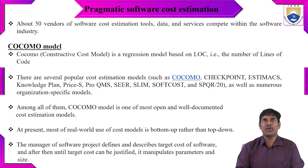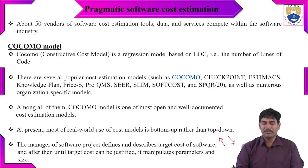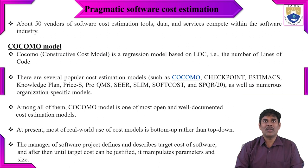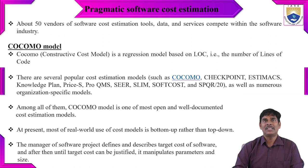At present, most real-world use of cost models is bottom-up rather than top-down. In the bottom-up approach, it goes from the bottom upward. The manager of a software project defines and describes the target cost of the software, and until the target cost can be justified, the manager manipulates parameters and size — checking different criteria to verify the target cost, with possible changes in parameters, size, and source lines of code.